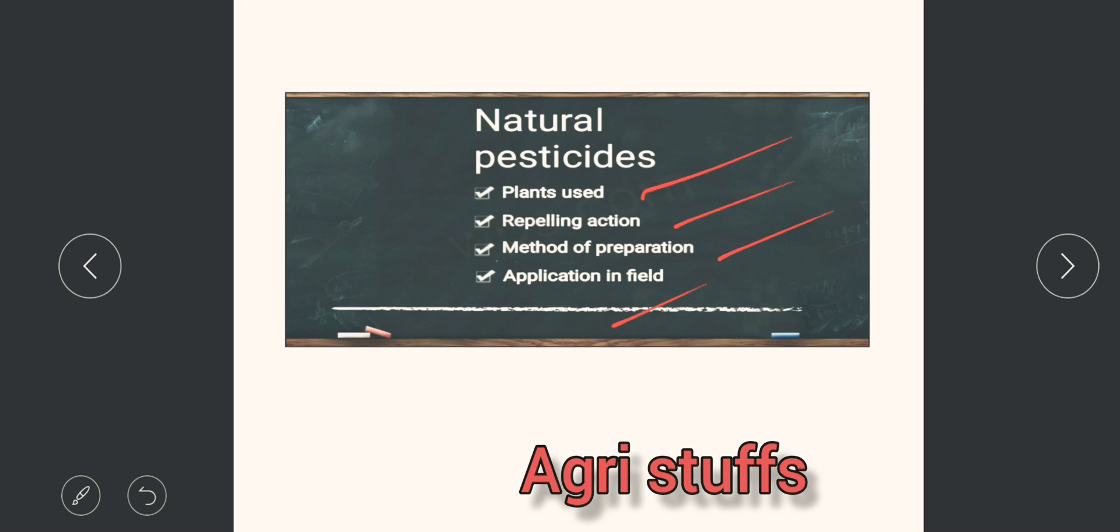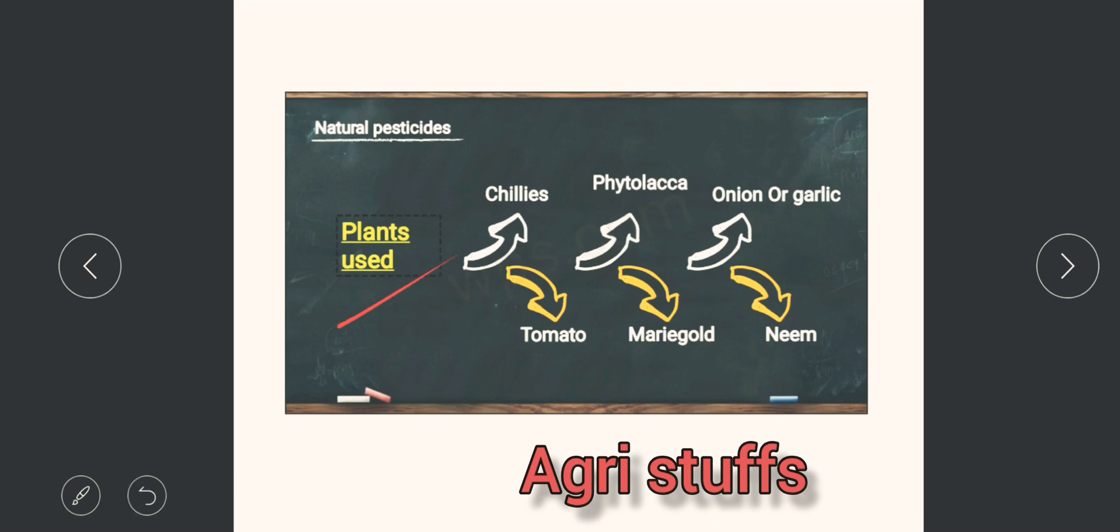So let us see some of the natural pesticides used for pest control. Some of the plants used are chillies, phytolacca, onion or garlic, tomato,